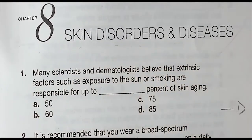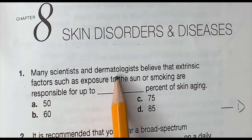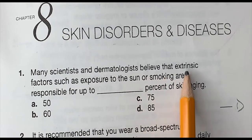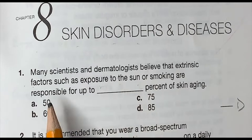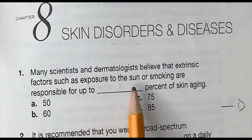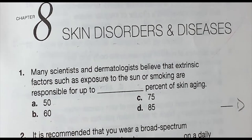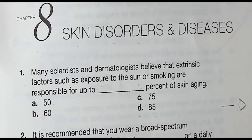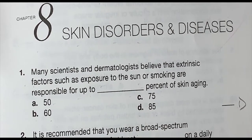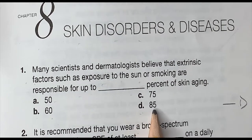Chapter 8: Skin Disorders and Diseases. Question 1: Many scientists and dermatologists believe that extrinsic factors such as exposure to the sun and smoking are responsible for up to blank percentage of skin aging. Is it A, 50. B, 60. C, 75. Or D, 85. And the correct answer is D, 85.